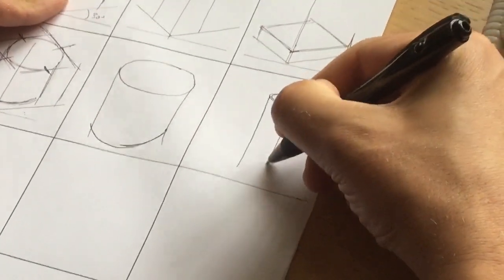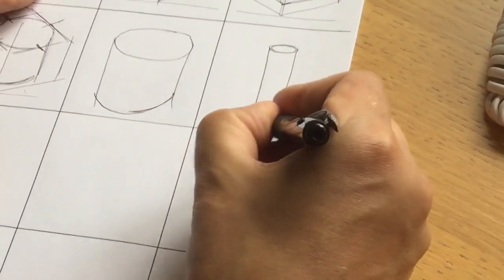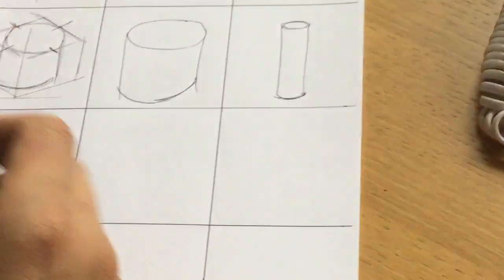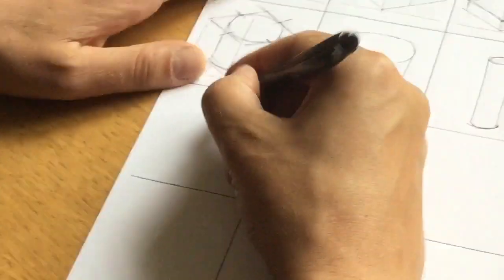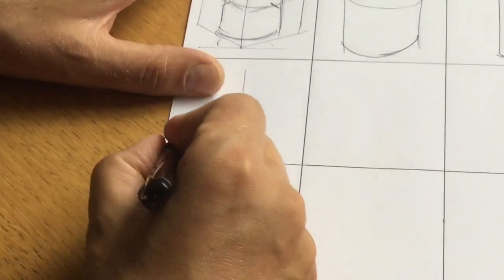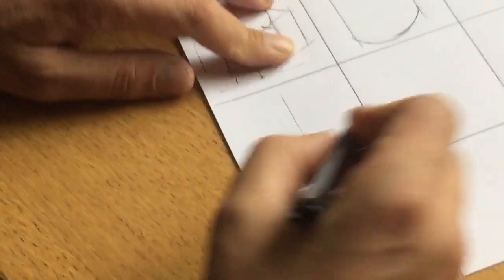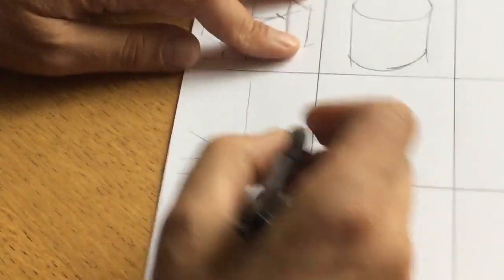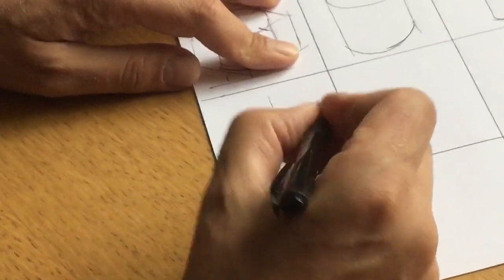Putting everything together now. So do your vertical, do your horizontal, do your 30 degrees. That's not a very good 30 degree, but anyway.